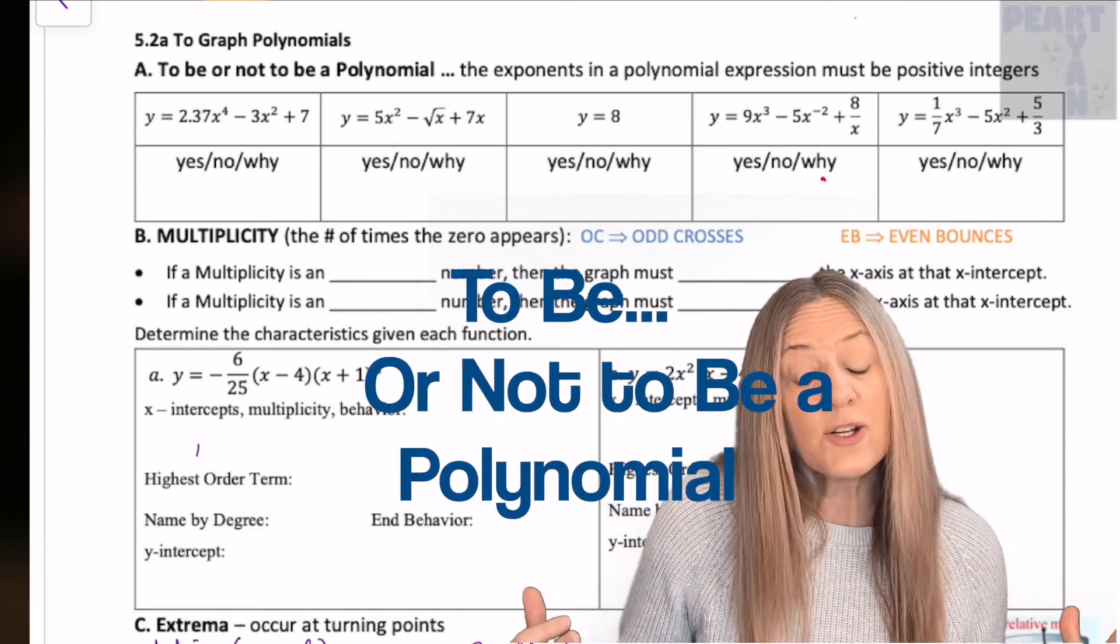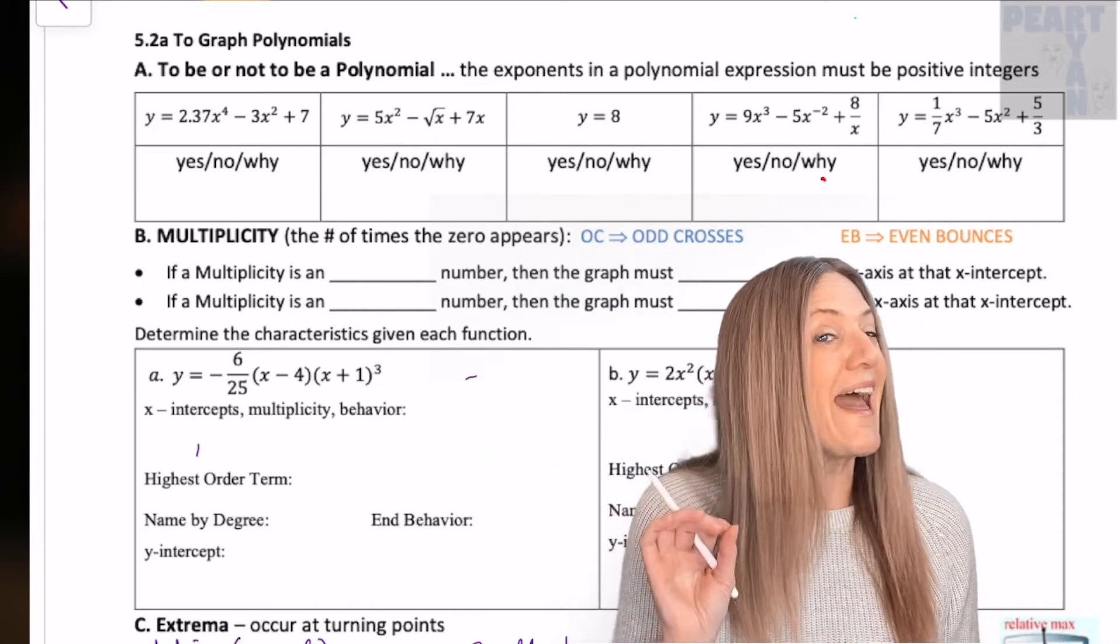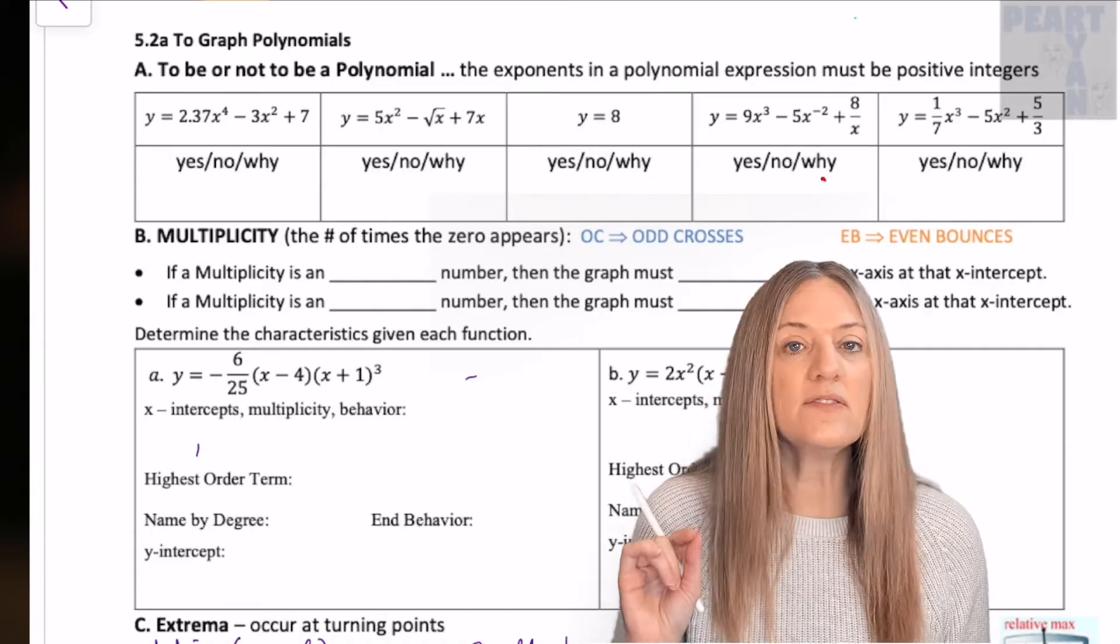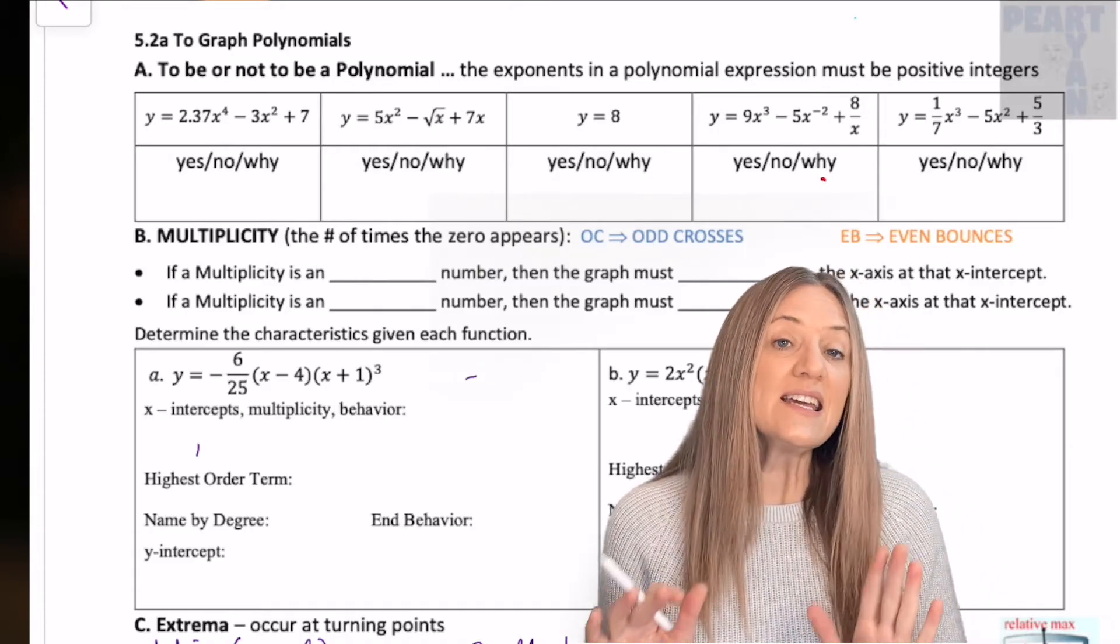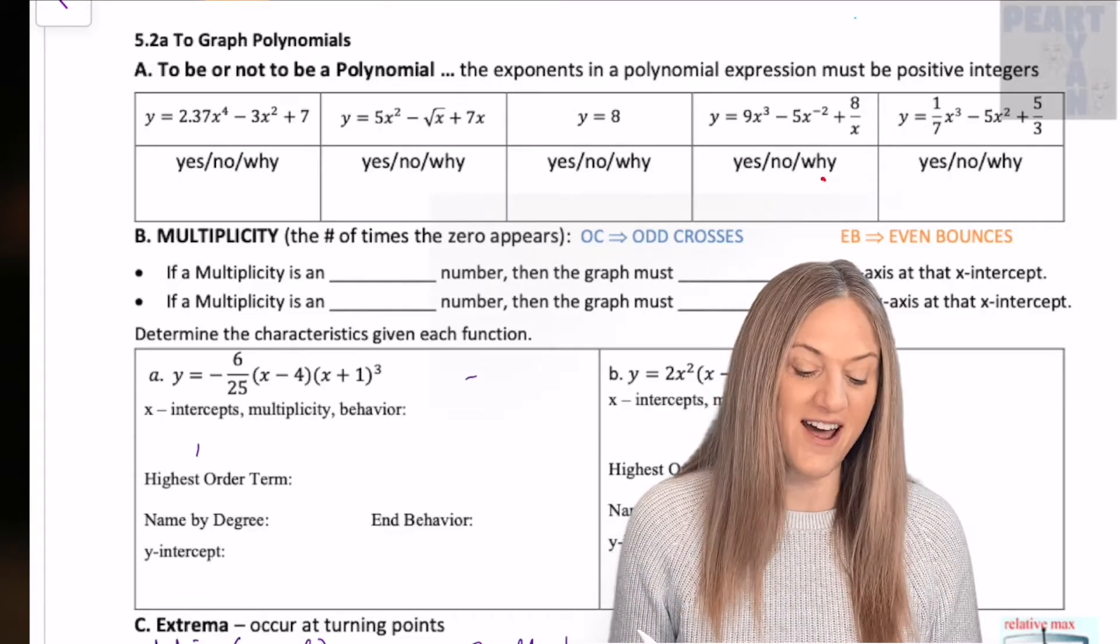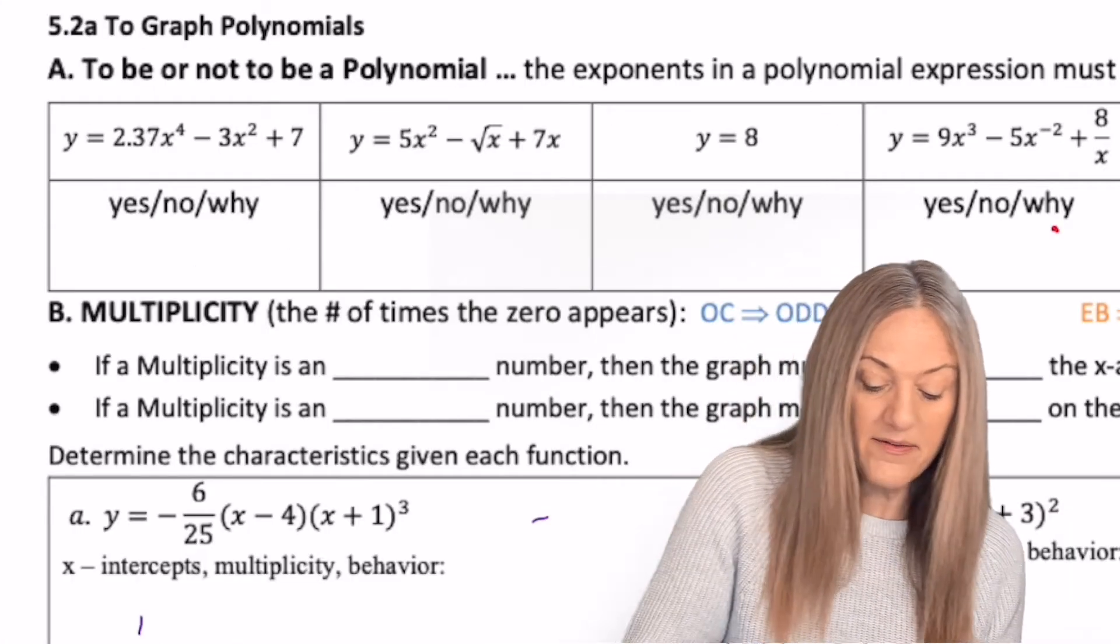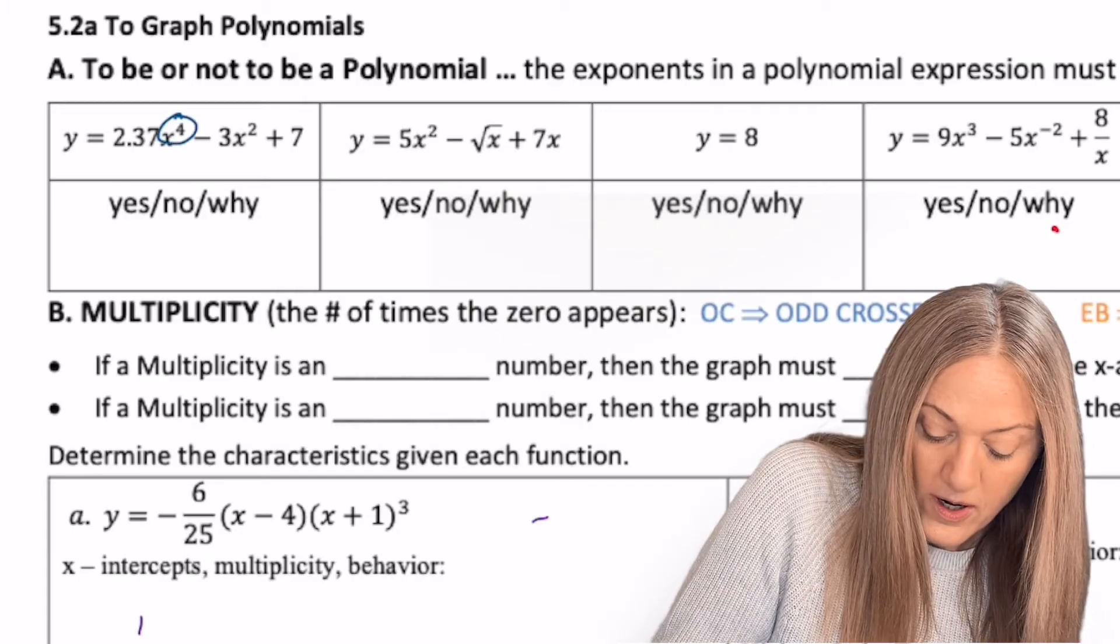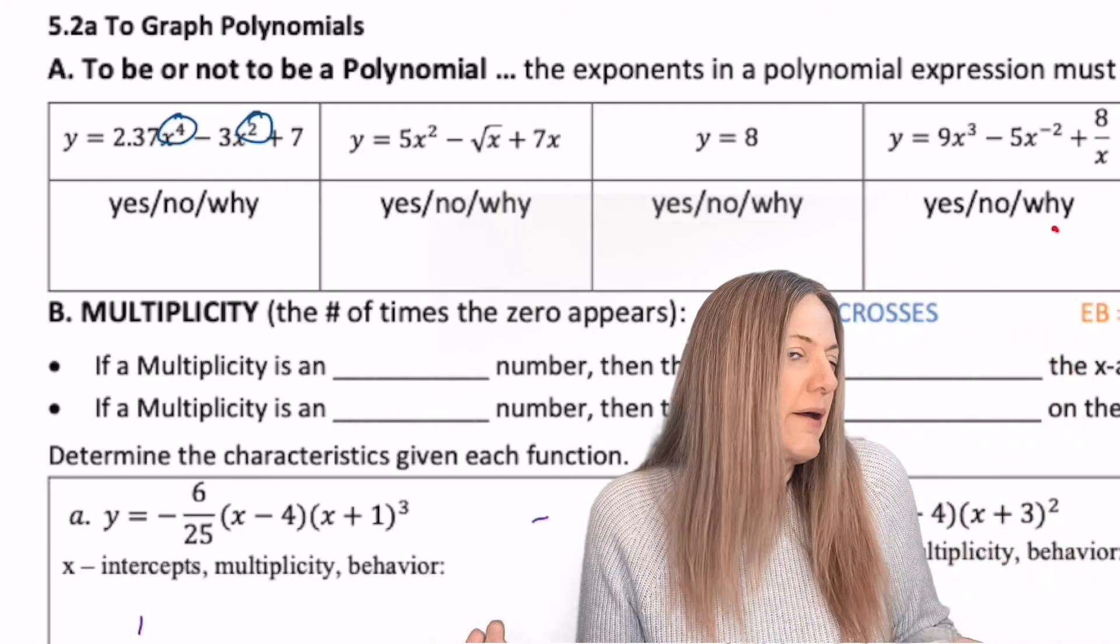To be or not to be a polynomial. The key here is that the exponents have to be positive integers. Let's look at the examples and determine which are polynomials and which are not. In the first example, we have exponents of 4, 2, and then 7, a constant.